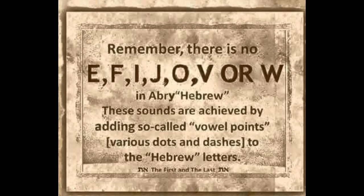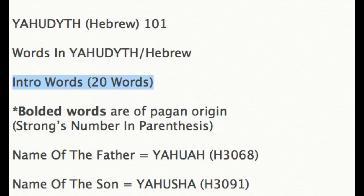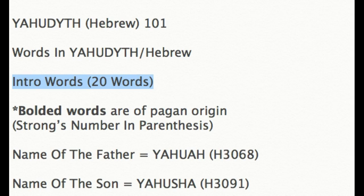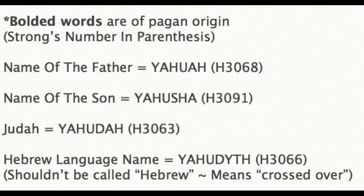We went over that in more detail in part 1, but now we're going to talk more about the pronunciation of introductory words. We're going to cover basic pronunciation of words you definitely need to know — about 20 foundational words, comprising different names, nouns, verbs, and other words needed for a basic Hebraic or Yahudiath understanding. Bolded words in the list below are of pagan origin, and the Strong's number is listed in parentheses.